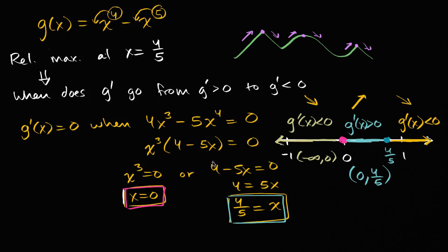If they asked where we have a relative minimum point, that's going to happen at x equals zero, since we're going from decreasing to increasing there. But we've answered the question of where we find a relative maximum point.